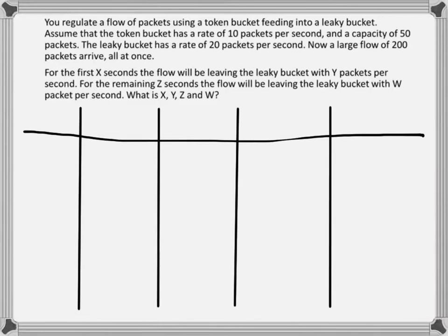When the 200 packets arrive, 50 of them — corresponding to the number of tokens — will fall down to the leaky bucket immediately, and then they will drip out from there with a constant rate. In the token bucket, packets will be leaving with 10 packets per second.